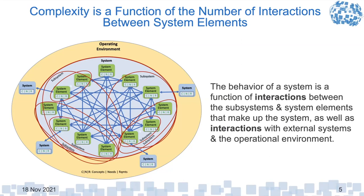The behavior of the system is a function of the interaction between subsystem elements that make up the system, as well as the interaction with external systems in the operational environment. There are going to be emerging behaviors, both good and bad, that were never addressed in any requirement. One thing we do during system validation is characterizing the system to see how it really behaves after all the pieces are put together. It also raises the question of whether it makes sense to verify a subsystem in isolation from the macro system it's part of — and I really don't think it does. If you don't model the external environment and external systems of which your system is a part, I'm not sure how valid your assessment of your system is.